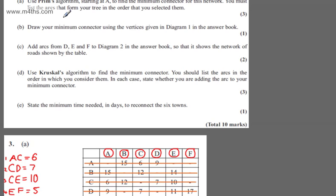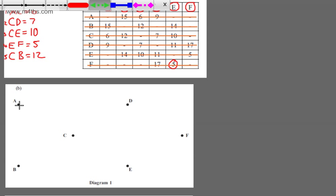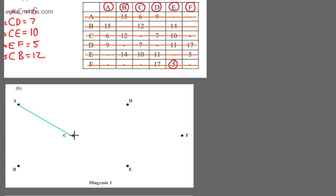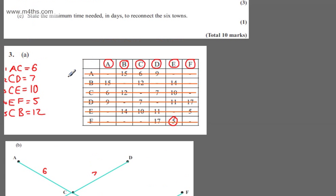In part B, for one mark, it says draw your minimum connector — that is, the minimum spanning tree — using the vertices given in diagram 1. So we've got A to C, C to D, C to E, E to F, and C to B. The weights are: A–C=6, C–D=7, C–E=10, E–F=5, and C–B=12. Remember, with Prim's you can't create cycles because you're connecting vertices — you've already been to one so you wouldn't go to it again. That is our minimum connector.